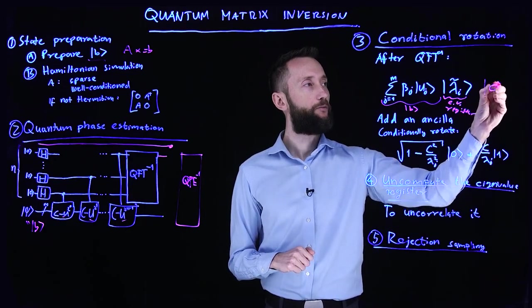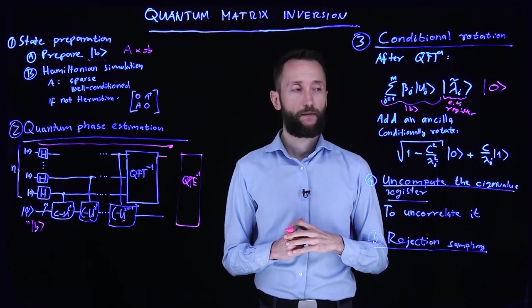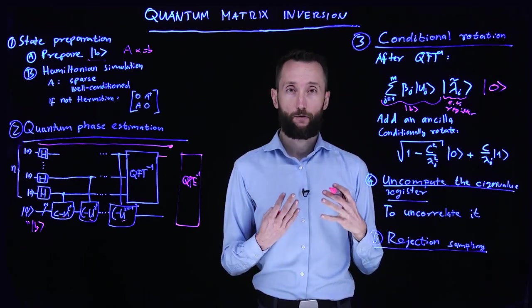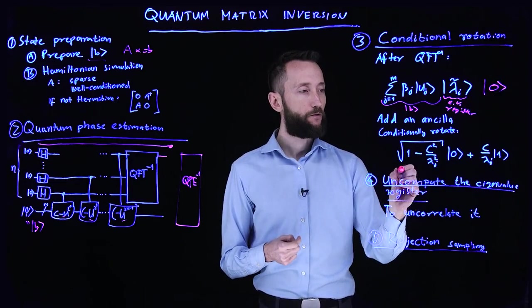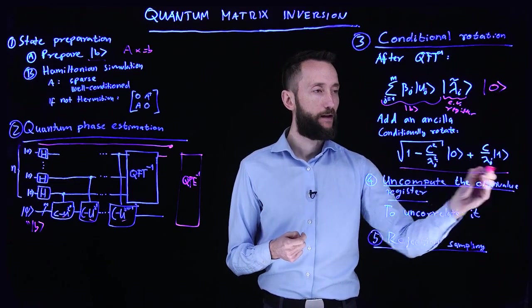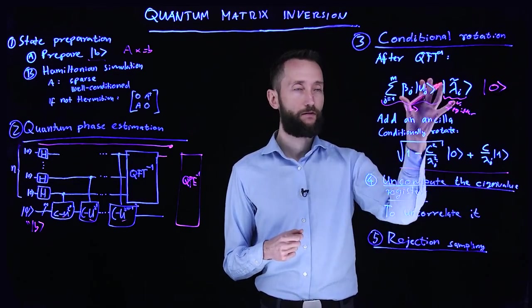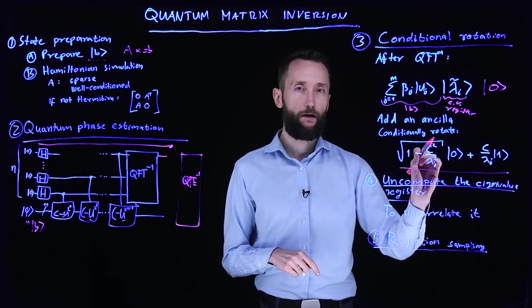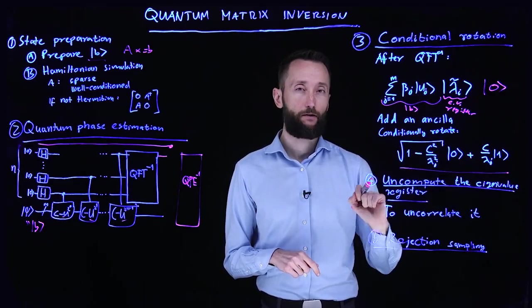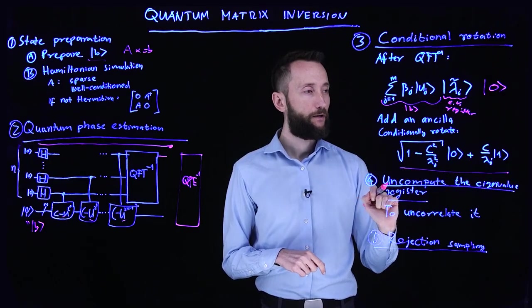So that ancilla would be in the zero state. And we apply conditional rotation on this. And we do this to create this superposition in the ancilla qubit. So the rest of the state is the same. But we change the ancilla qubit with the conditional rotation into this one.